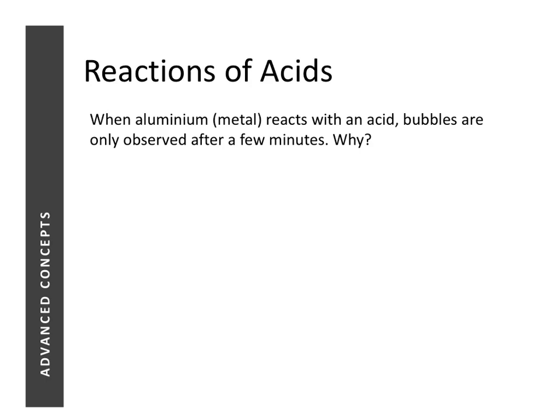We have learnt that reactive metals can react with acids to produce salt and hydrogen gas. In this particular example, when aluminium reacts with an acid, we will only start to see bubbles or effervescence after a few minutes. So why is that so? Aluminium is reactive enough to react with the acid, so it should produce a salt and hydrogen gas. Theoretically, we should see effervescence.